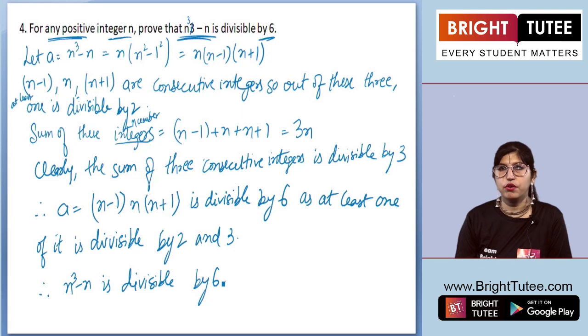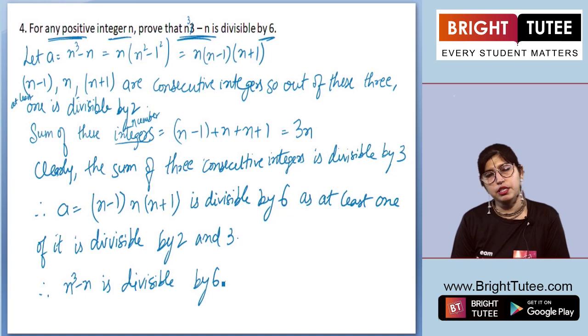So what did we do? We first proved that it is divisible by 2, then we proved that it is divisible by 3. So ultimately it will be divisible by 6.